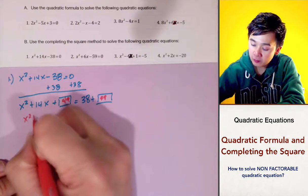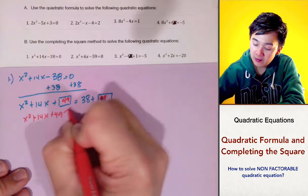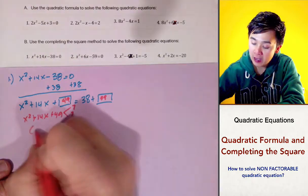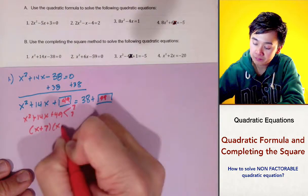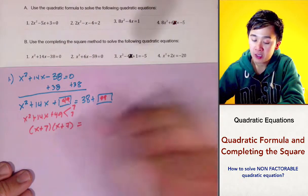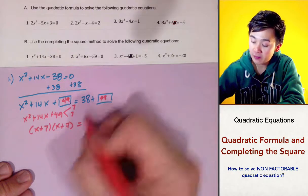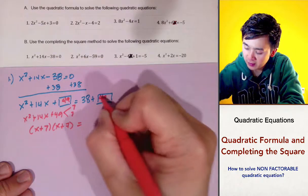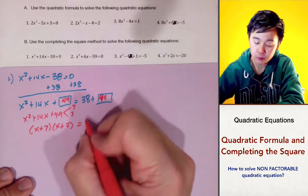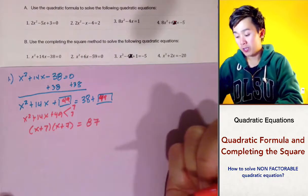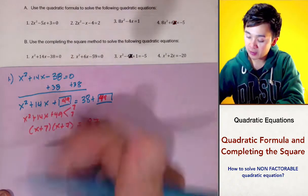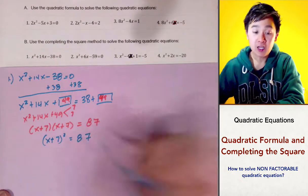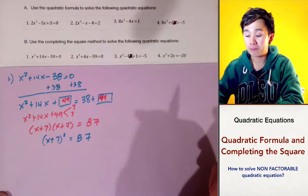So 49 is the number that completes the square. If we have x squared plus 14x plus 49, the factors of 49 that add up to 14 are 7 and 7. We now have a perfect square trinomial equal to 38 plus 49, which equals 87. We can rewrite this as x plus 7 squared equals 87. This is the first half of our completing the square method.